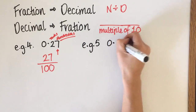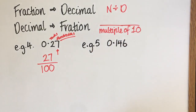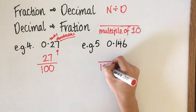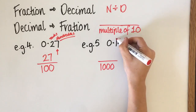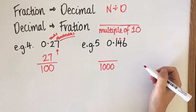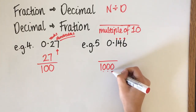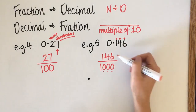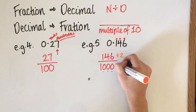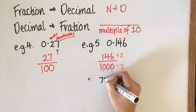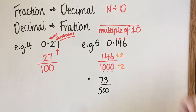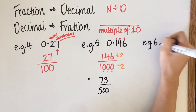Next example: 0.146. This goes to the thousandths place — or just count three decimal places, so you need three zeros in the denominator, giving 146 over 1000. I know 2 goes into both, so dividing by 2 gives 73 over 500, and that's the most simplified form.